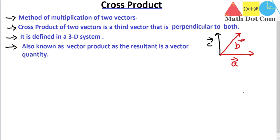The resultant of the cross product will be a vector rather than a scalar quantity. Basically, cross product is used to determine the vector which is perpendicular to the plane containing the two vectors — so it has that application.